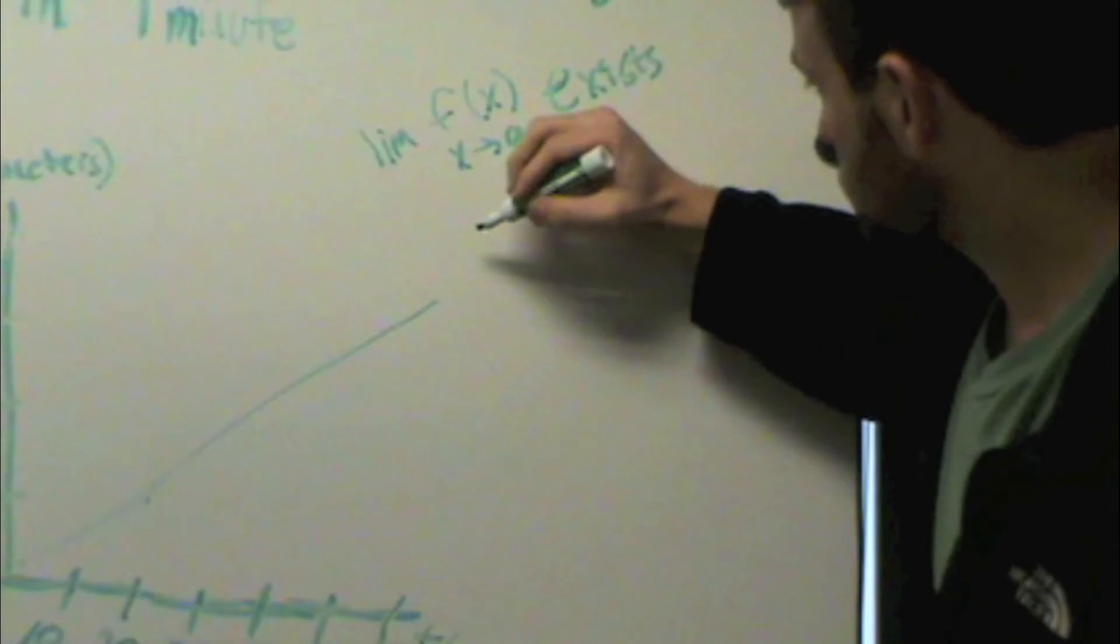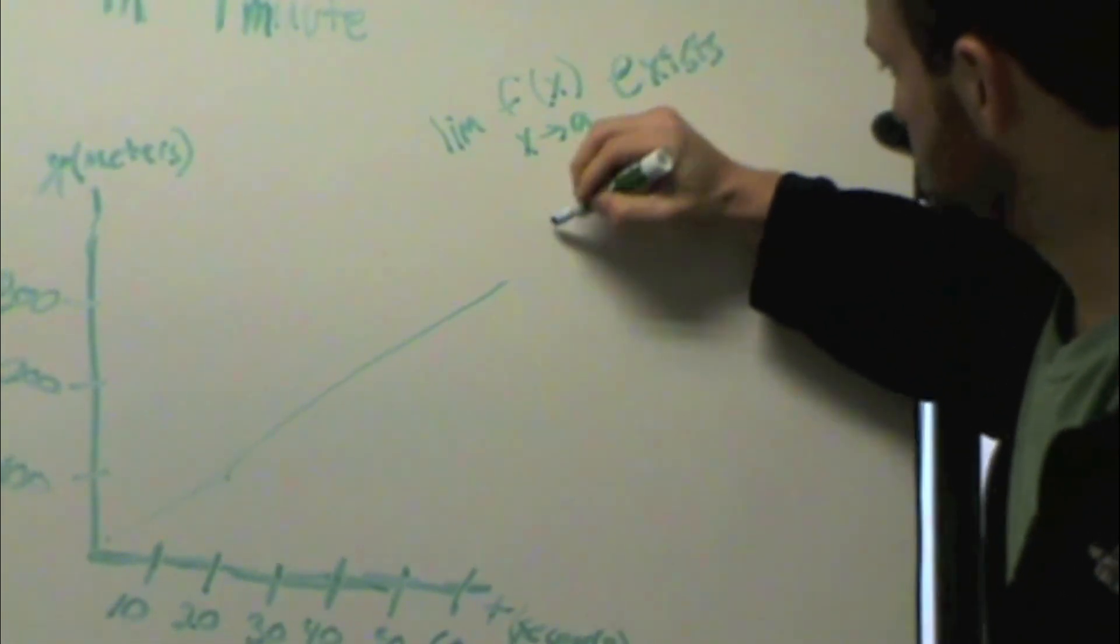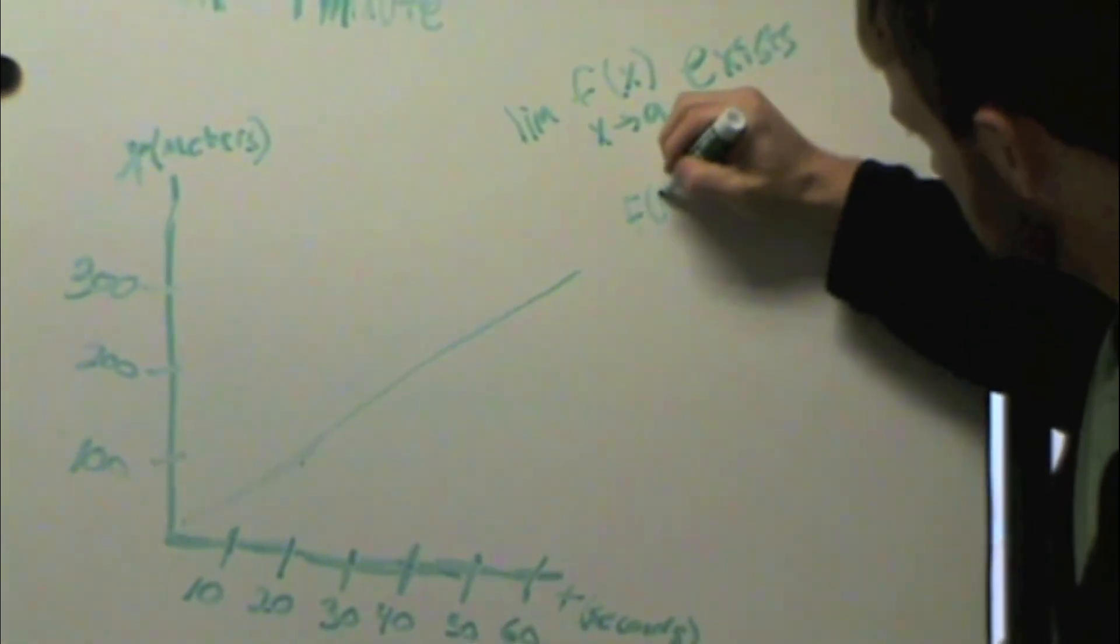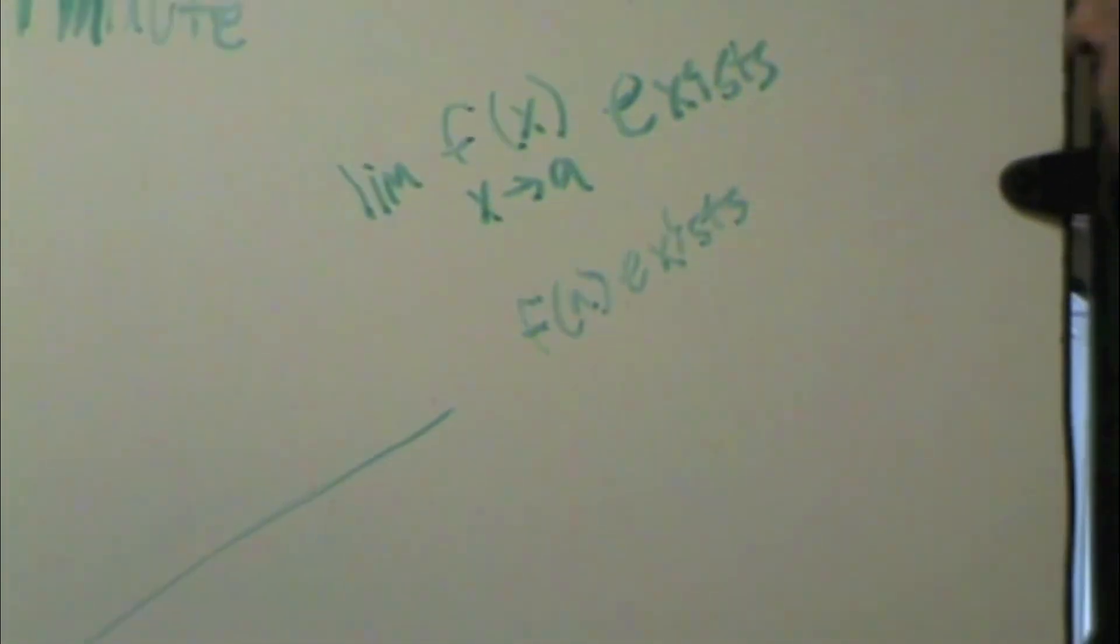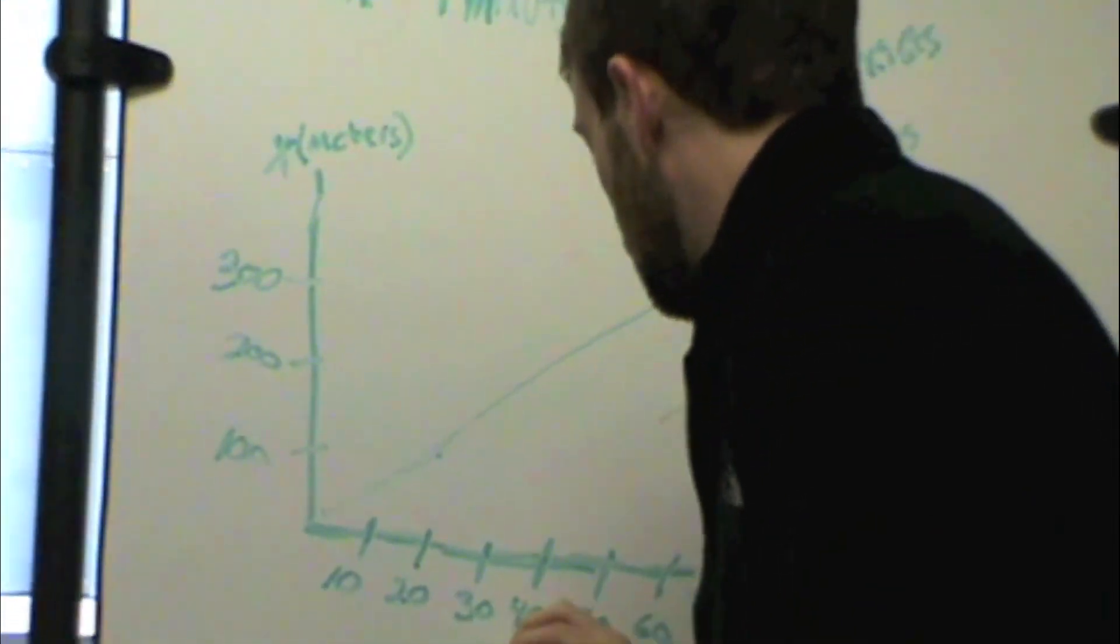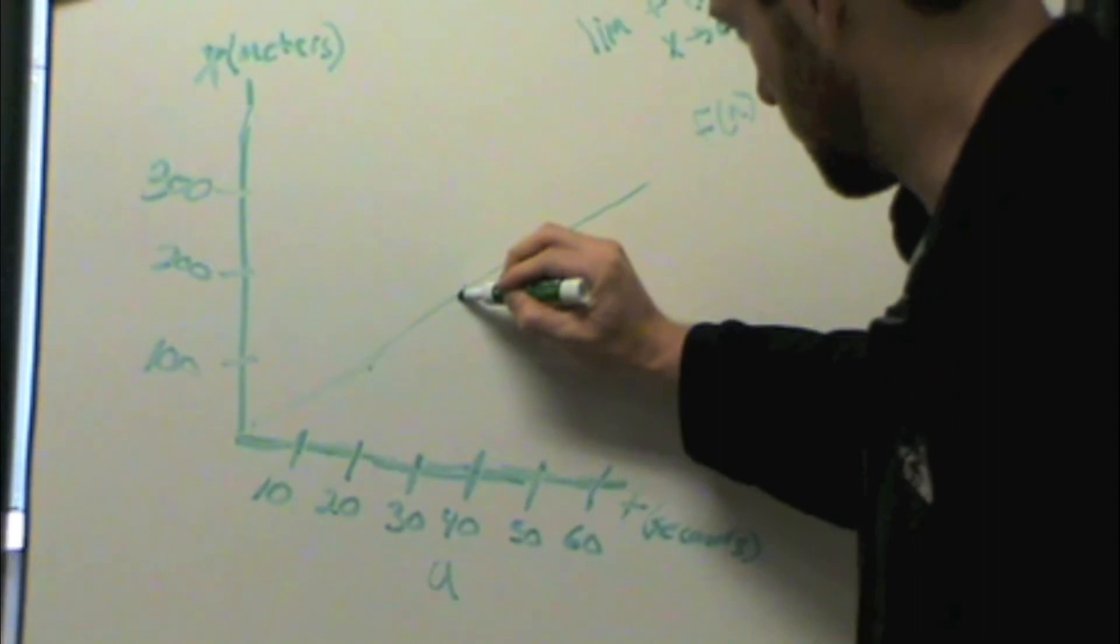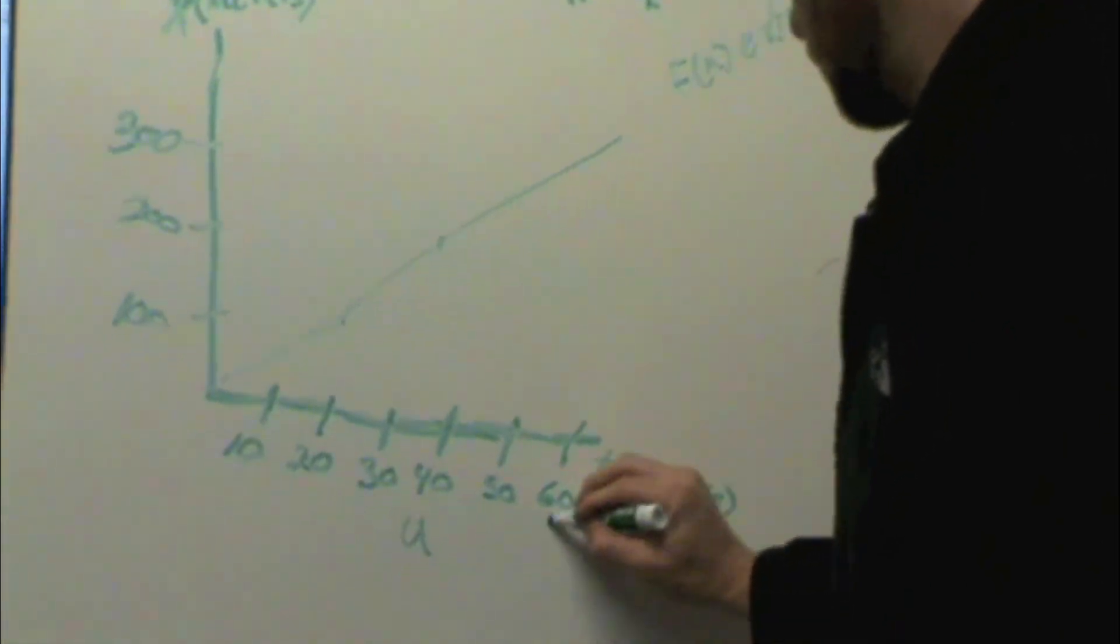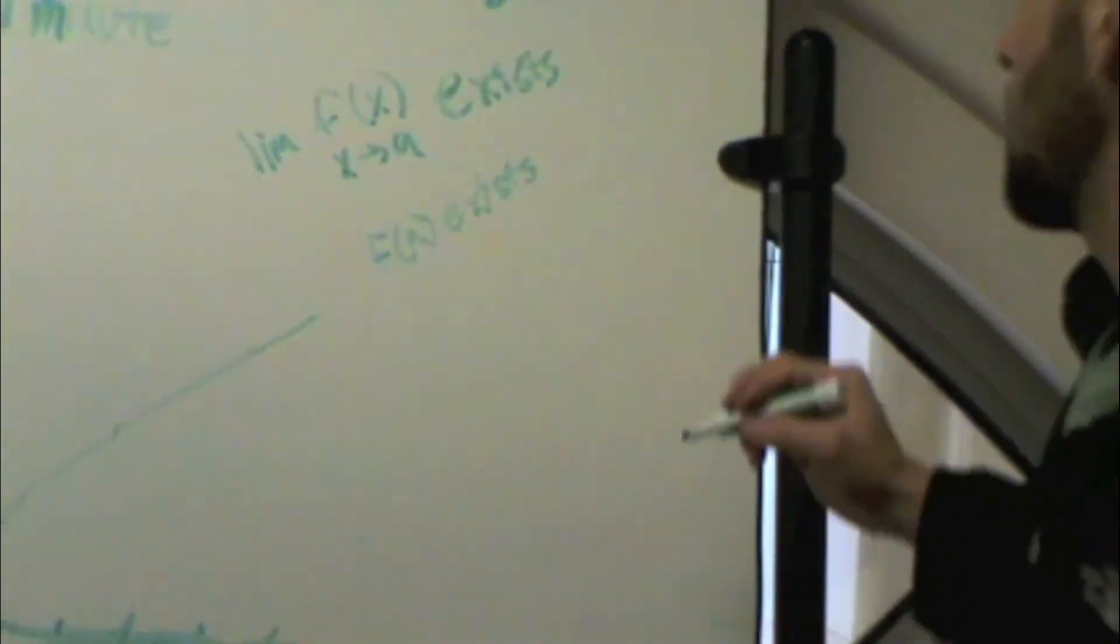Also, we know that f of a exists. So if we had a point right here, let's call this a, we know that it exists on this line right here, or over here somewhere. Basically anywhere on the graph, it's going to exist.